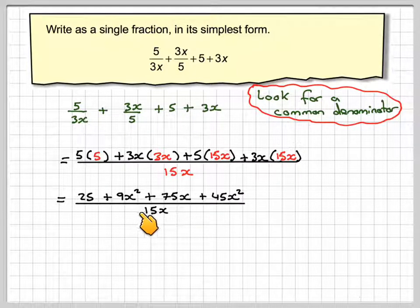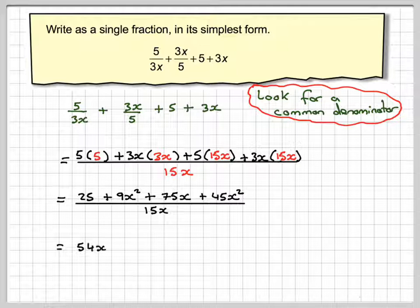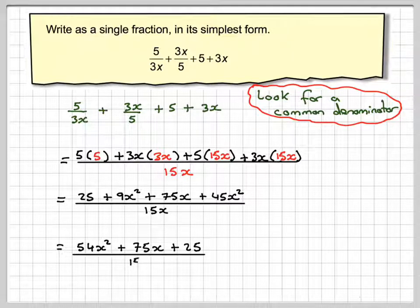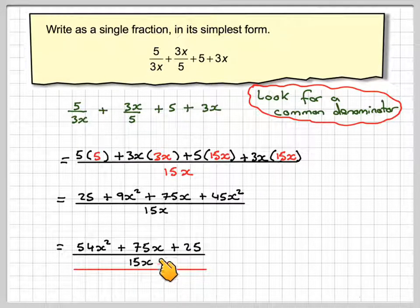So collecting out the like terms, 9x squared plus 45x makes 54x squared, plus 75x plus 25, all over 15x. And this is now a fraction in its simplest form.